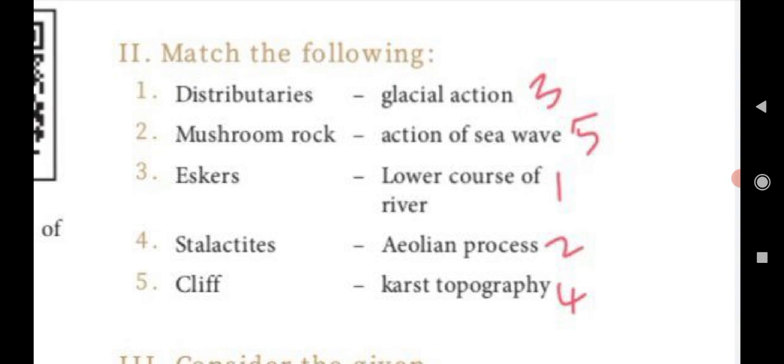Next, eskers, glacial action. Eskers are formed by glacial action. Fourth, stalactites, the answer is karst topography. Stalactites are found in karst topography.